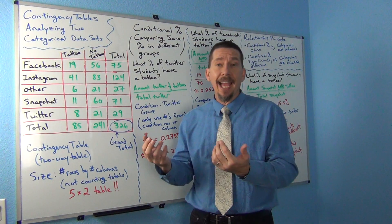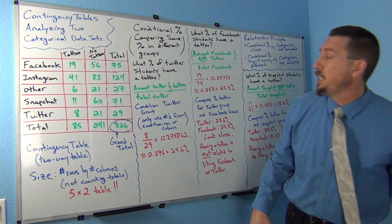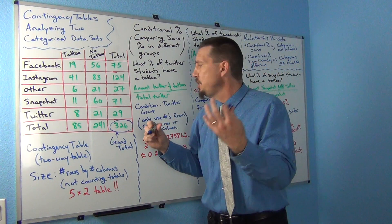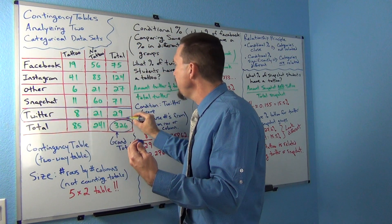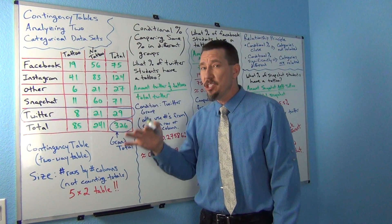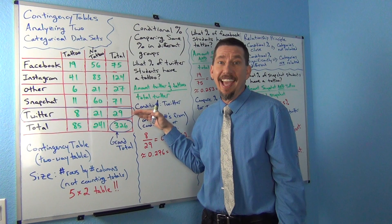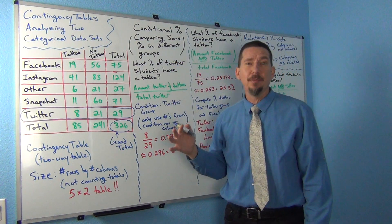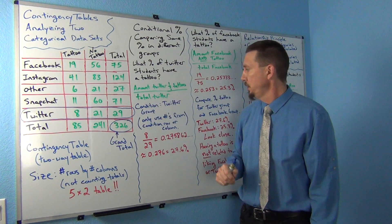One key strategy I like to use is to circle the row or column that has the condition. Since the condition is Twitter students, I'm circling the Twitter students row. The Twitter students might be a row or a column — in our case it's a row. This percentage we're going to calculate only comes from the Twitter students, so you only use the numbers in that row.